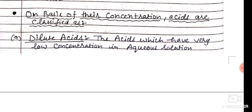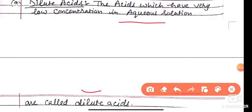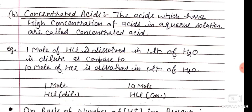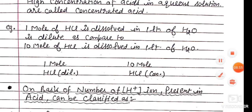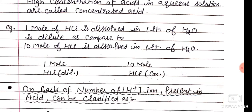On the basis of their concentration, acids are classified as dilute acids and concentrated acids. Dilute acids have very low concentration in aqueous solution. Concentrated acids have high concentration. For example, one mole of HCl in one liter of water is dilute compared to ten moles of HCl in one liter of water.